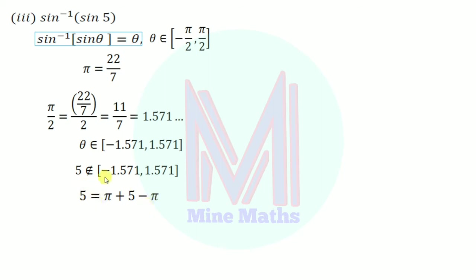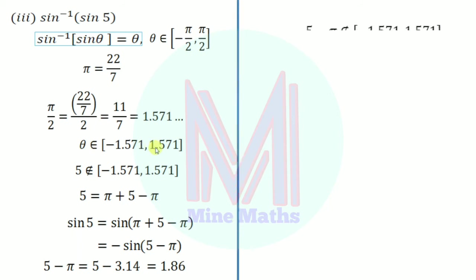So we write 5 equals π plus 5 minus π. Now we apply sin 180 plus theta formula, which gives minus sin of 5 minus π. But theta must be between minus π by 2 and plus π by 2. We check: 5 minus π equals 5 minus 3.14, which equals 1.86. This value is in the limit, but sin 5 equals minus sin of 5 minus π, so 5 minus π does not work for the original problem.